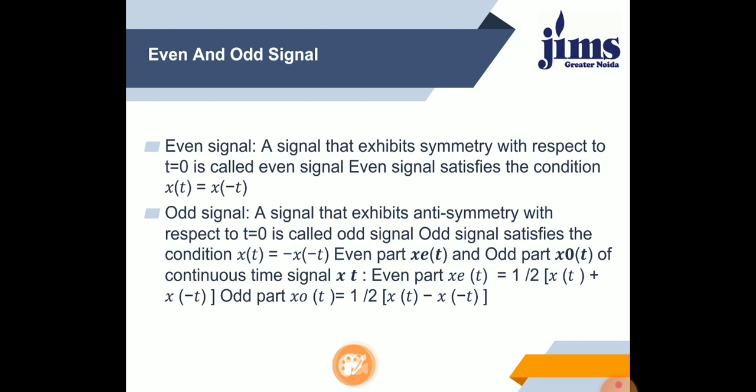An odd signal exhibits anti-symmetry with respect to t equal to 0. Odd signal satisfies the condition x(t) equal to −x(−t). When the power of x is odd, like 1, 3, 5 — meaning x¹, x³, x⁵ — those are always odd signals. The even part of x(t) is given by: even part = (1/2)[x(t) + x(−t)], and the odd part = (1/2)[x(t) − x(−t)].